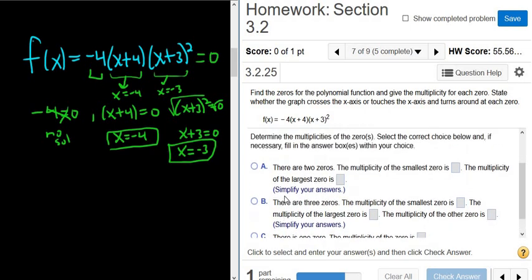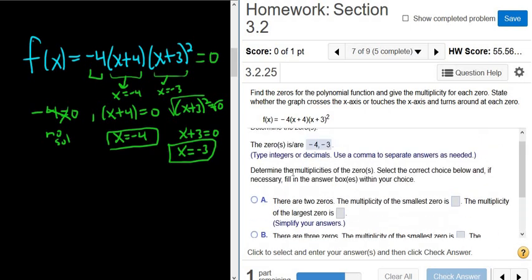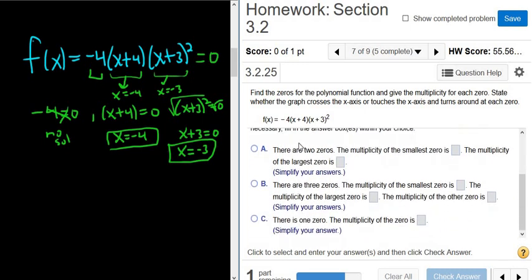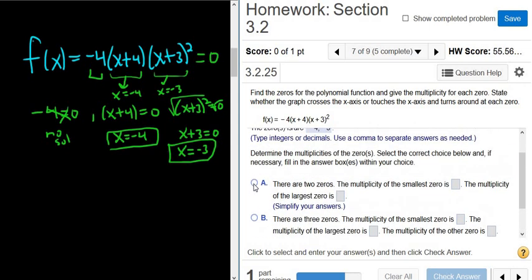Looks like we have a million different choices here. So it says determine the multiplicities of the zeros. Select the correct choice below, and if necessary, fill in the answer boxes within your choice. Okay, so there are two zeros, there are three zeros, there is one zero. Well, obviously there are two zeros, so it's got to be this choice here. The multiplicity of the smallest zero is, okay.